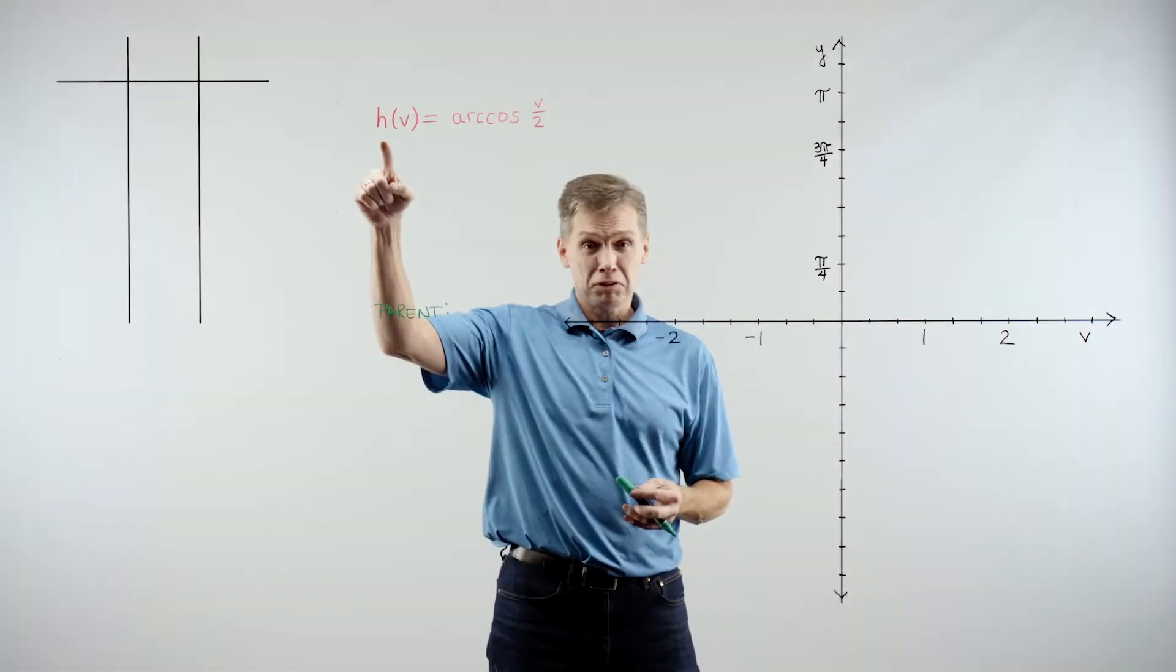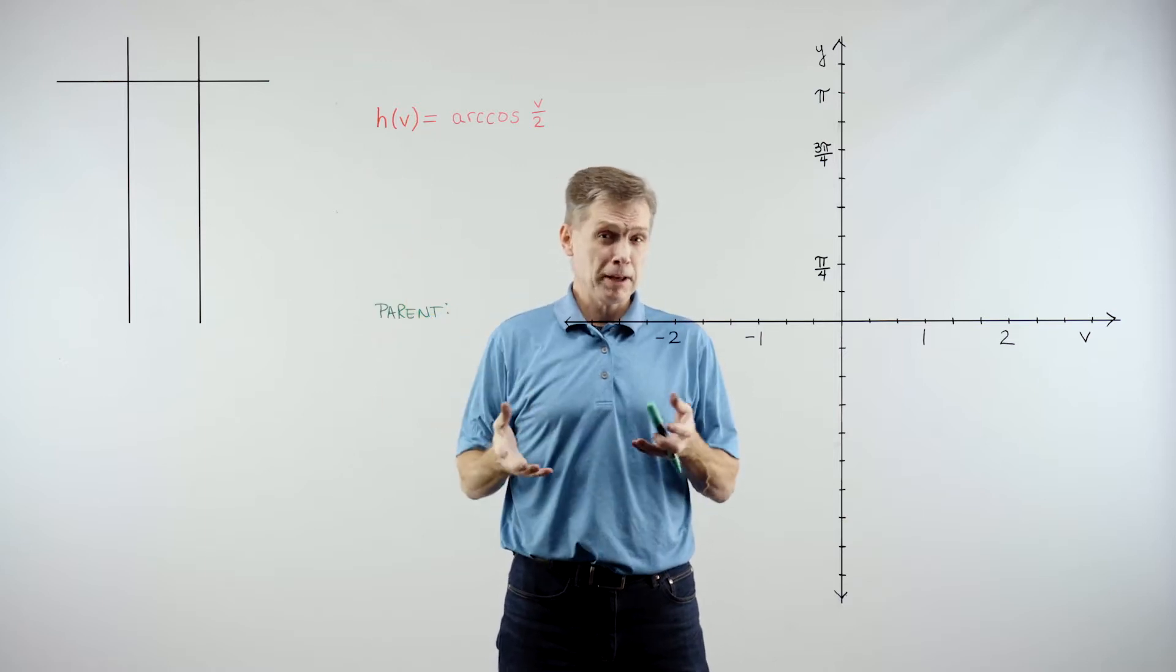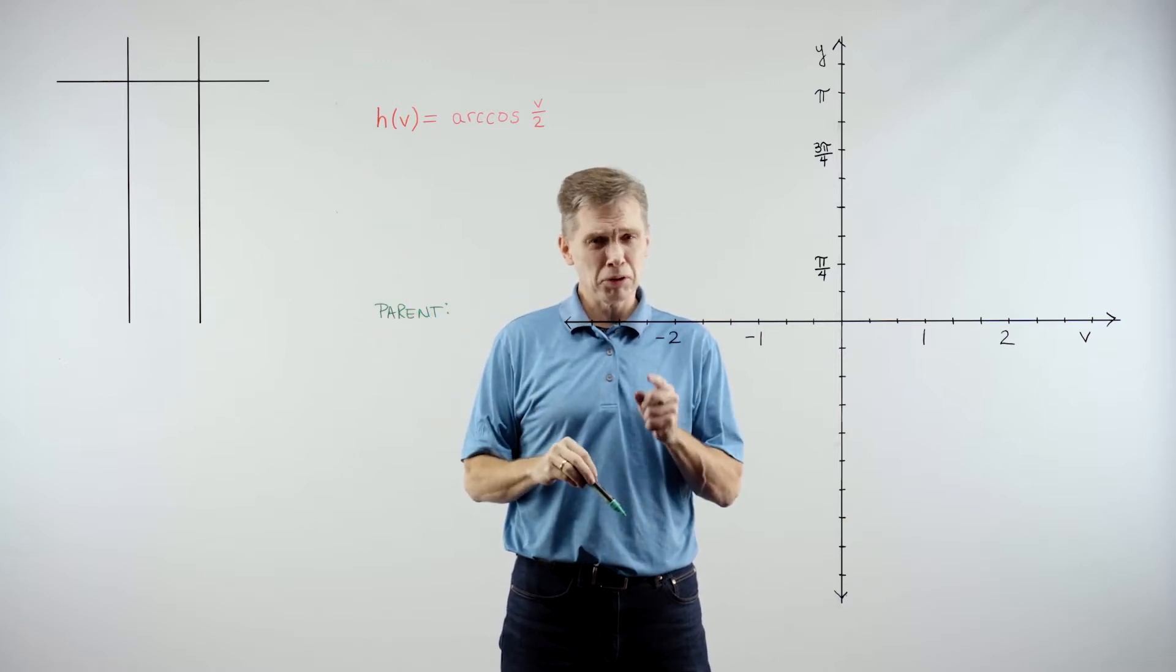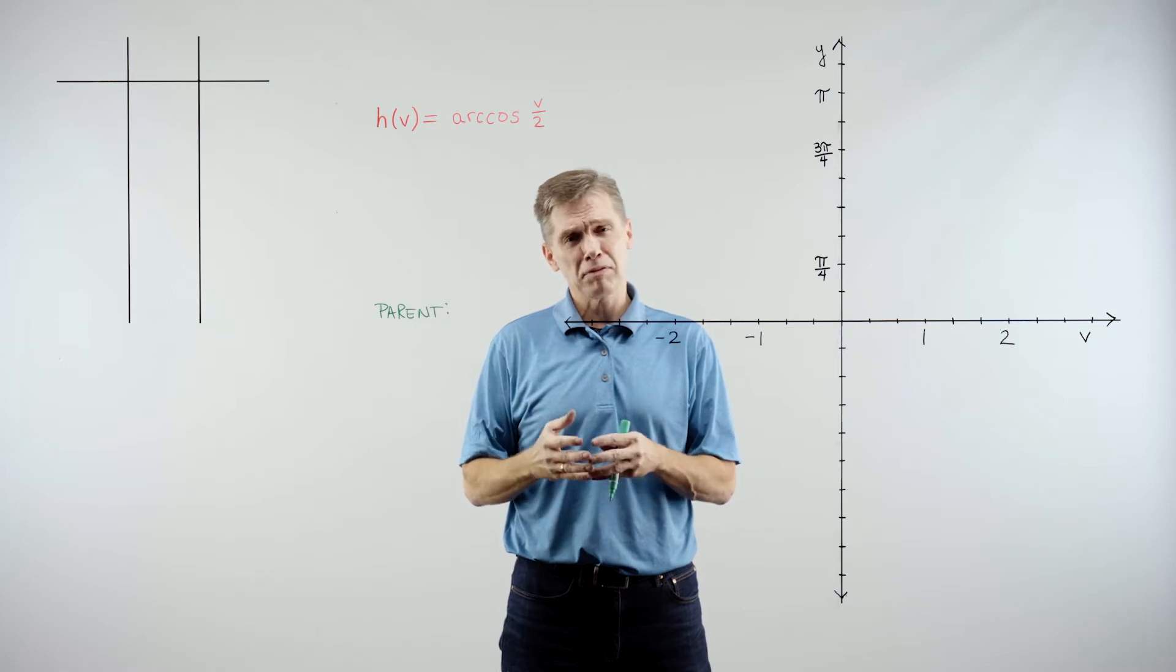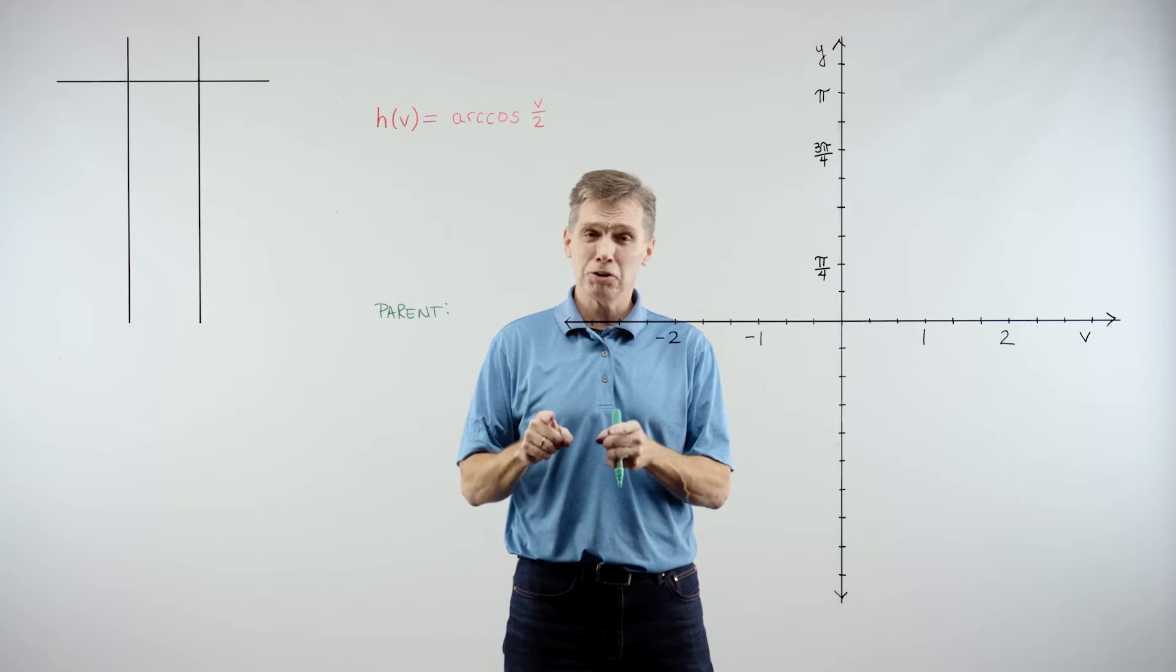Hi, I'm Pat. Alright, so in this problem they give us this function h of v, arc cosine of v over 2. They're asking us to graph that function, but then also to compare that graph to the graph of the parent inverse trigonometric function. Okay, so let's start there.